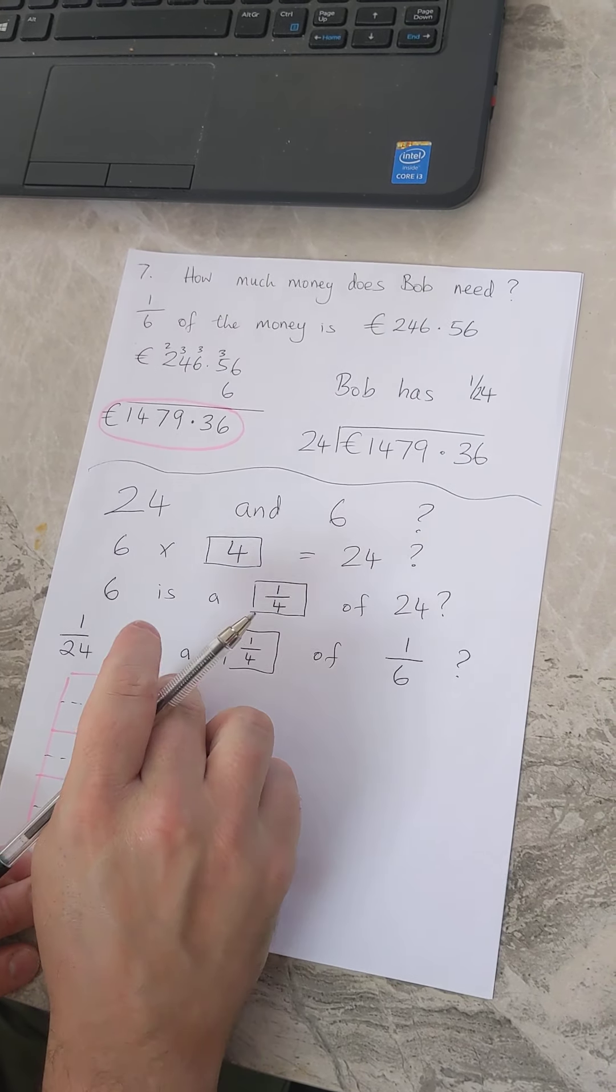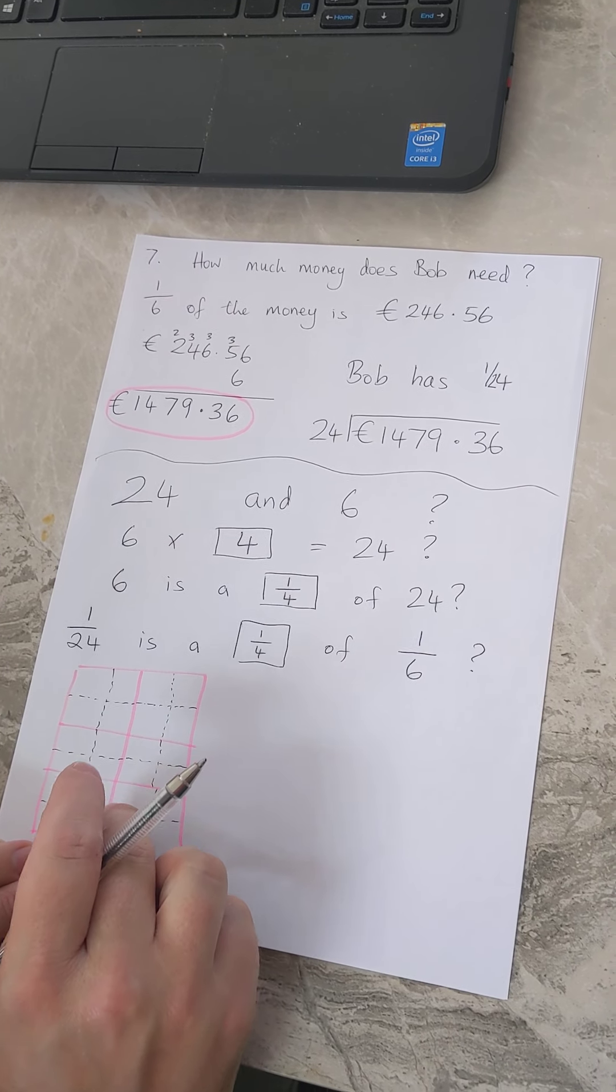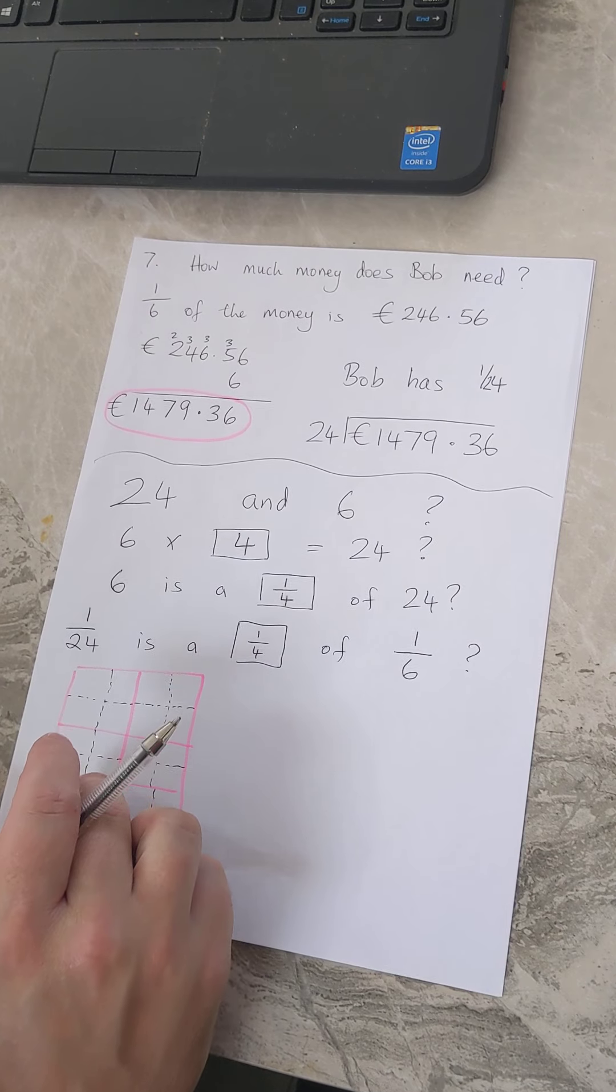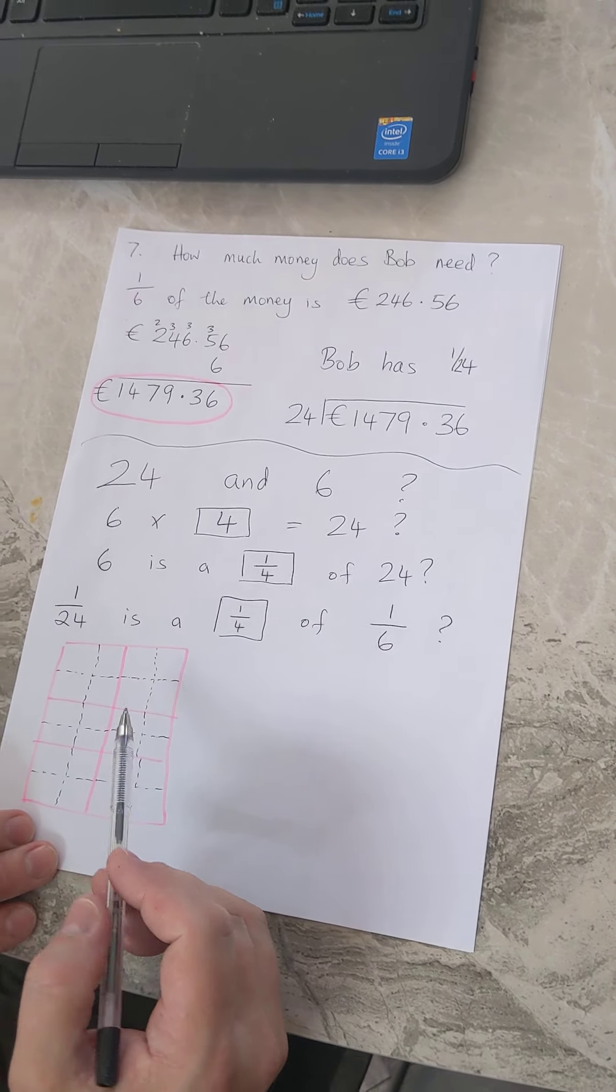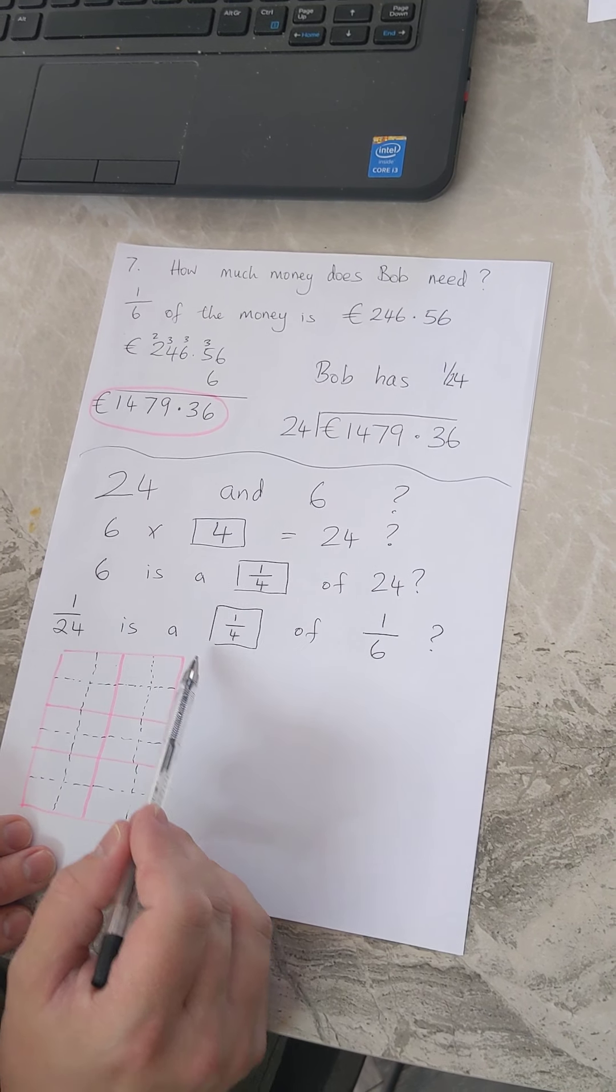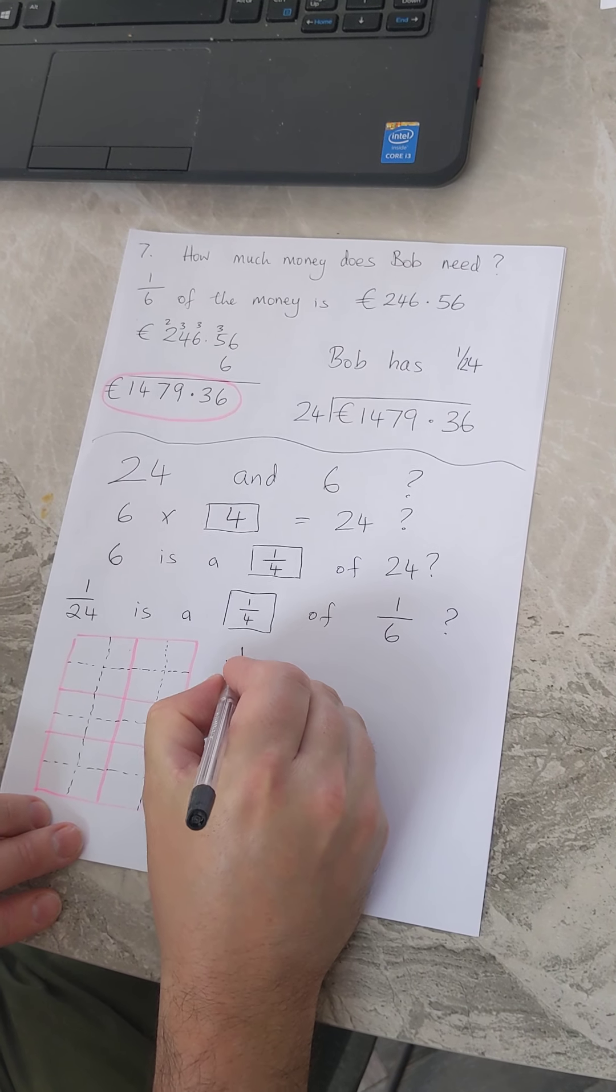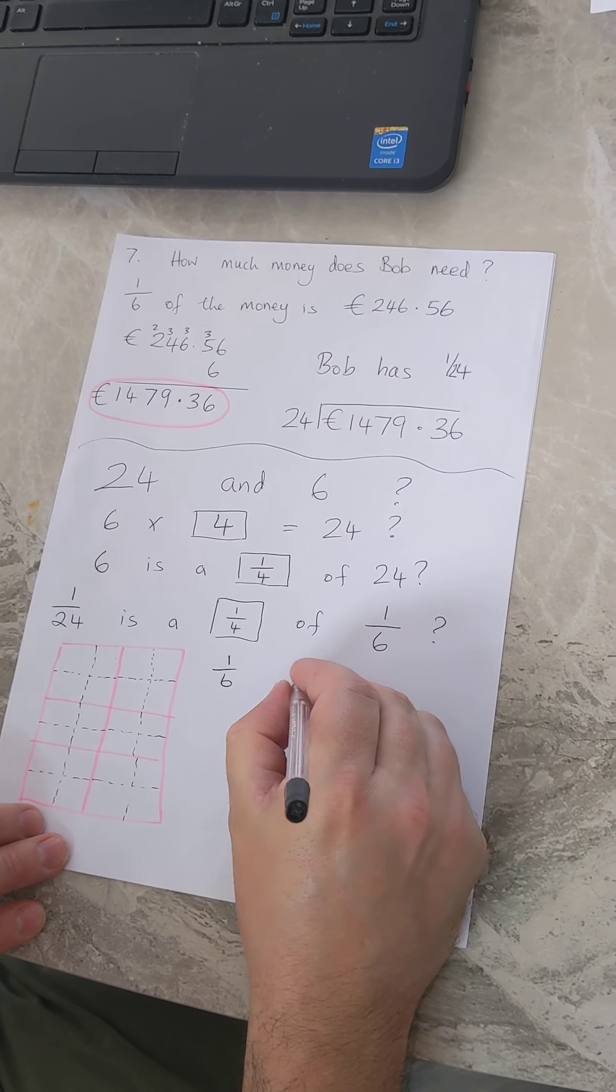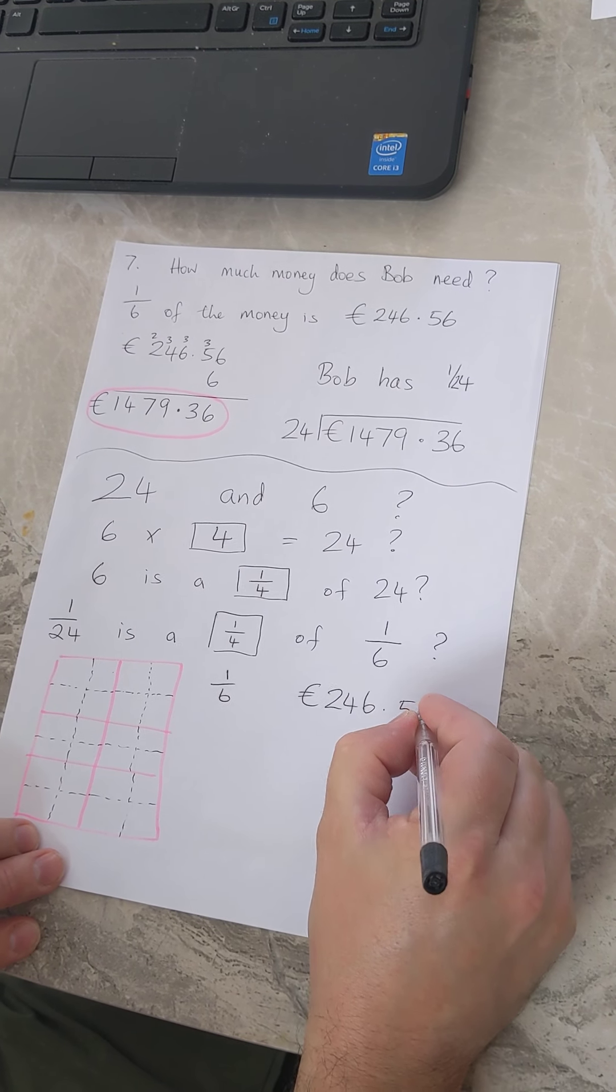That I have one, two, three, four, five, six, seven, eight, nine, ten, eleven, twelve, thirteen, fourteen, fifteen, sixteen, seventeen, eighteen, nineteen, twenty, twenty-one, twenty-two, twenty-three, twenty-four. So I've just proved here that a sixth if you divide it into quarters makes one twenty-fourth. So my sixth was 246.56.